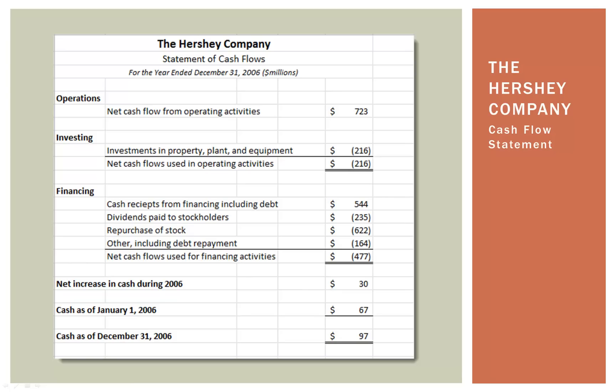Investing is when a company uses assets like cash to invest in equipment, a new plant, or a new computer system. Financing is how a business raises the money to operate — it can take out loans from banks, retain earnings, and so on. The cash flow is broken down into those three subcategories. Looking at the Hershey cash flow statement, the company had a net cash flow from operations of $723 million. That does not mean they had $723 million in sales or $723 million of net income — it just means $723 million more came in from operations than went out.